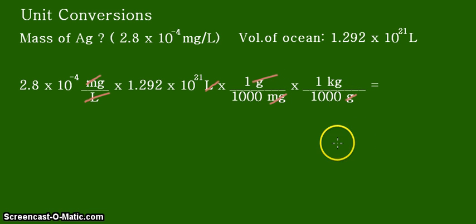We are now left with the unit kilograms, which is one of our desired units. You do the calculation to get your answer, and the answer is 3.6 times 10 to the positive 11 kilograms. That is the mass of the silver ions in the ocean in the unit kilograms.